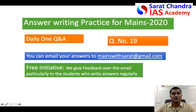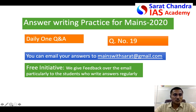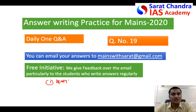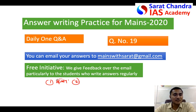Today we will discuss the answer for question number 19, a question from GS Chapter 4, Ethics. For ethics, I would say you have to follow four rules to score high marks. The first thing is: write the theory in your own words. Don't try to copy the theory from any website or book and don't try to reproduce it.